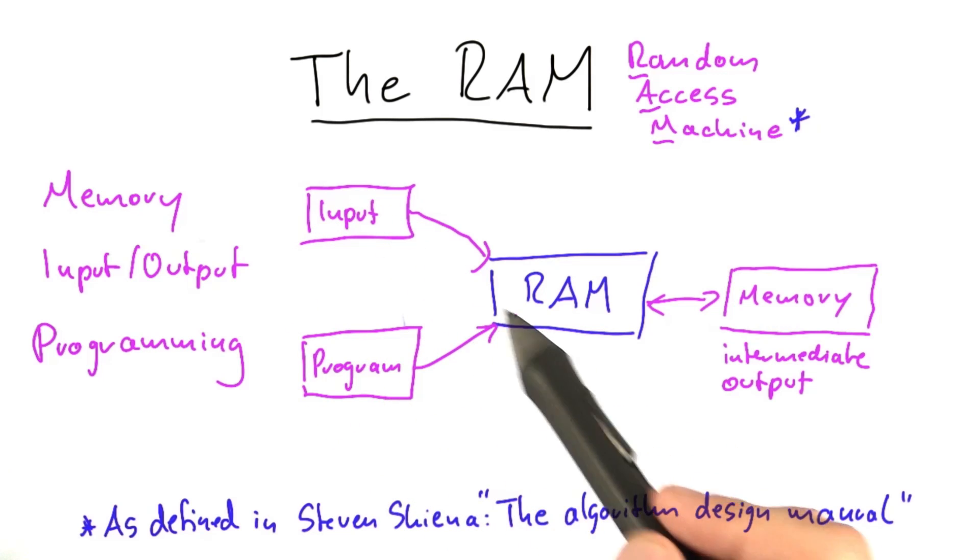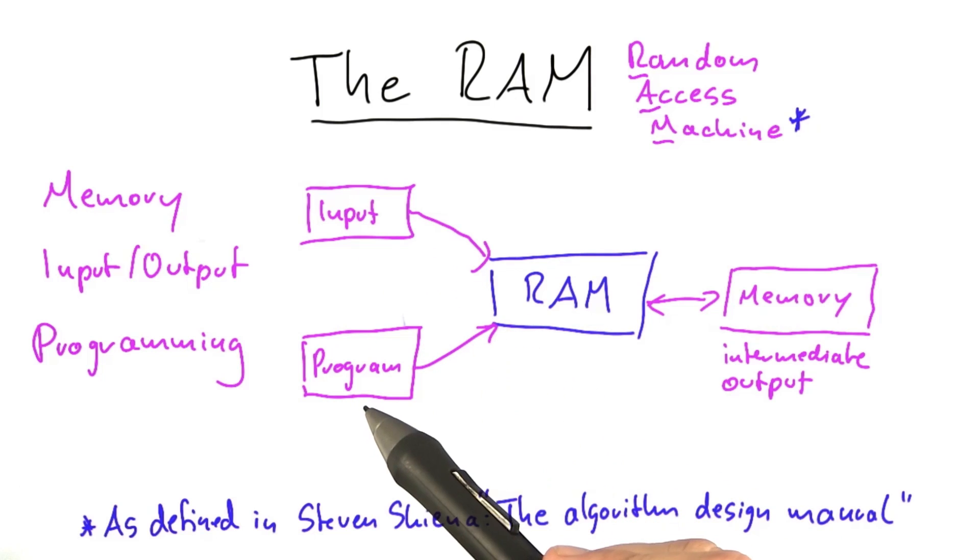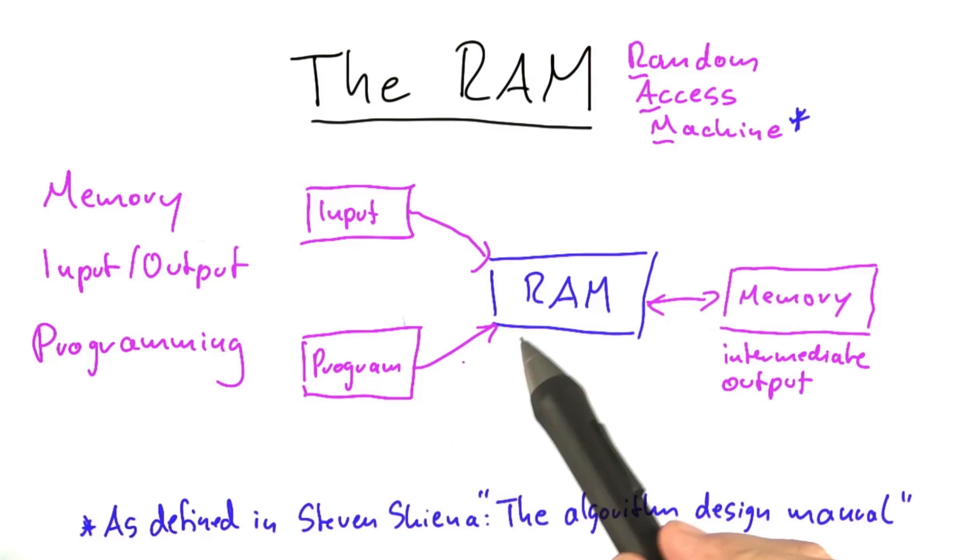And those two memories here on the left side are read-only, meaning that the RAM cannot modify the input—it can only read the input—and the RAM also cannot modify the program, it can only read the program.